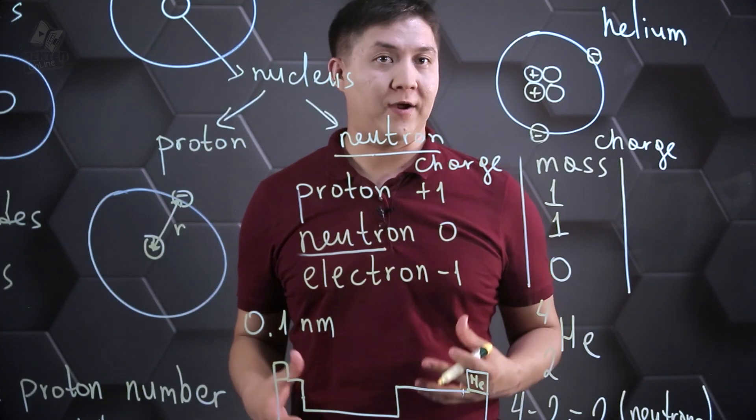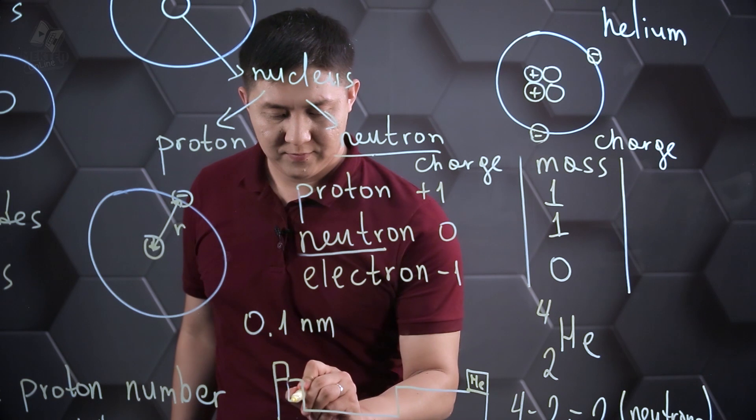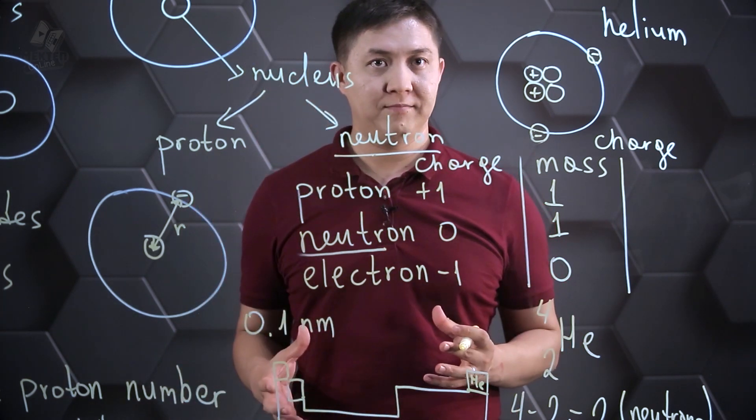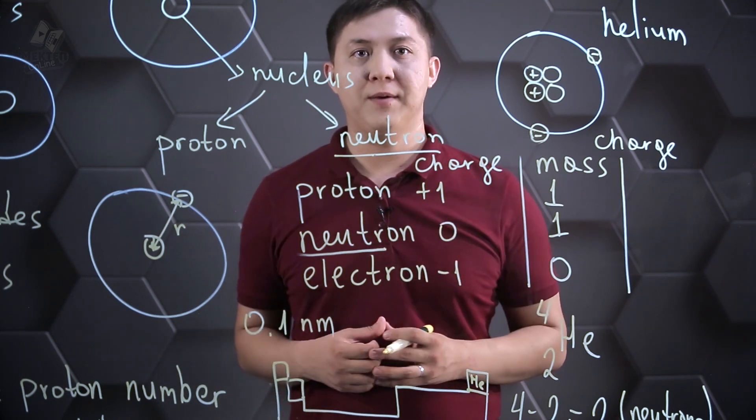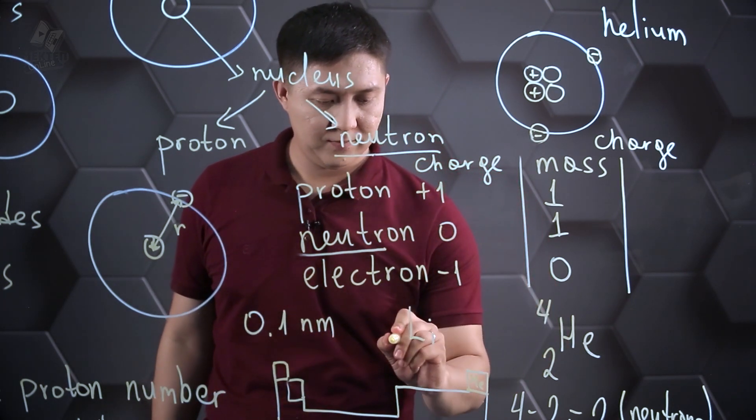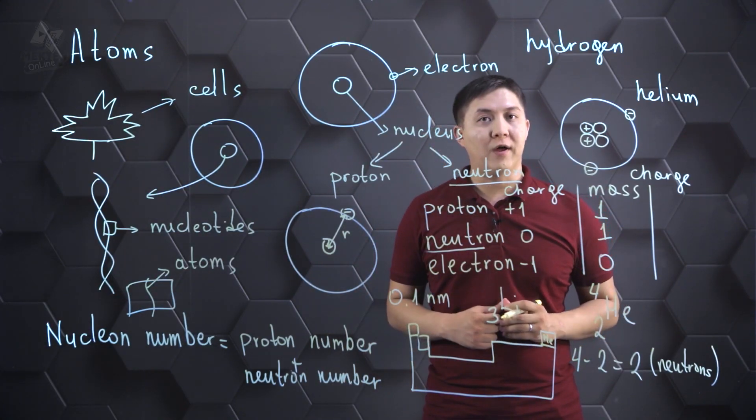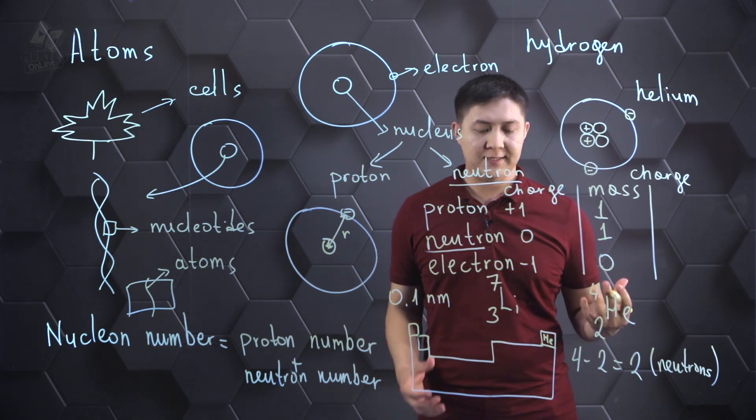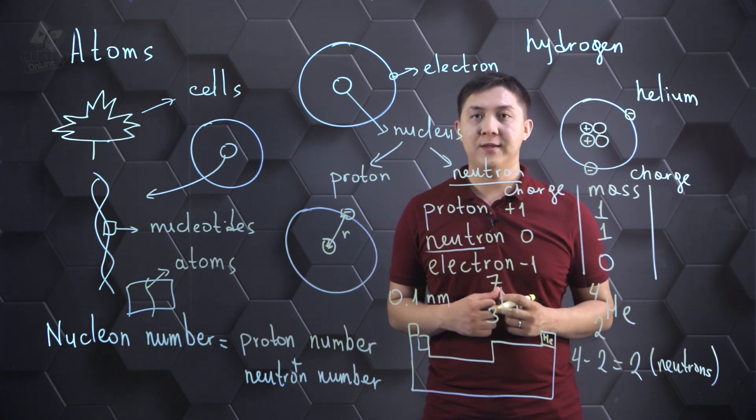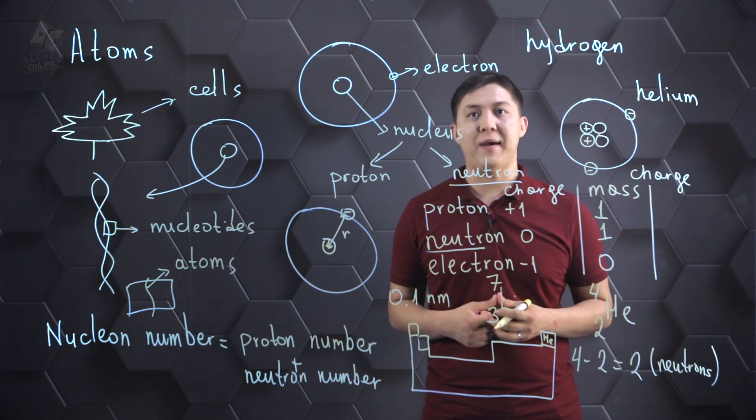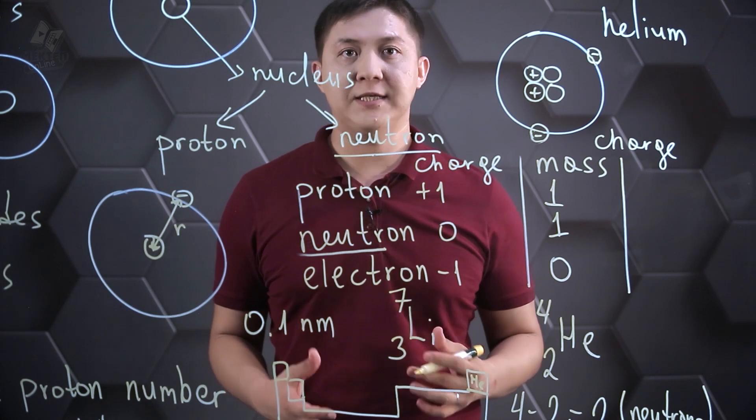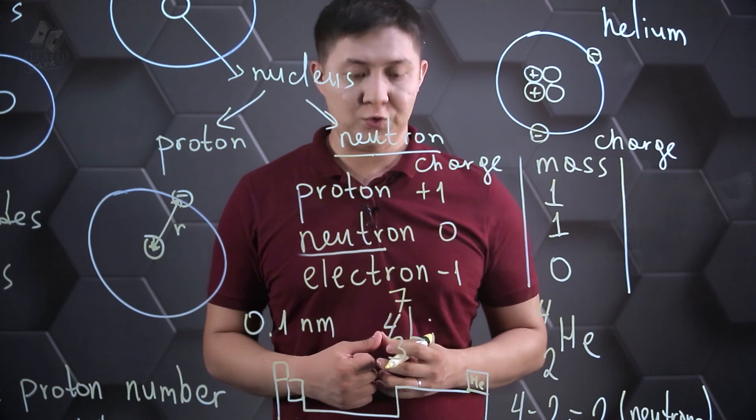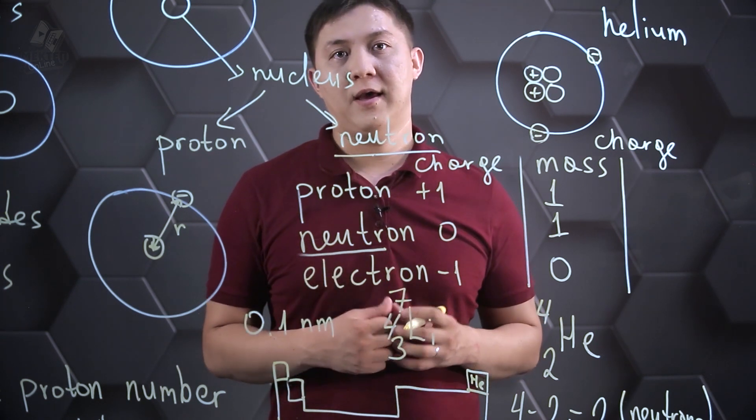If we look at another atom, lithium. Its atomic number is equal to 3. It means it has three protons. Its nucleon number is equal to 7. So, now let's calculate the number of neutrons in lithium atom. So, 7 minus 3 is 4. 4 is the number of neutrons in atom of lithium.